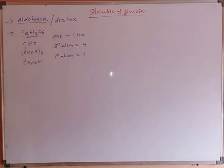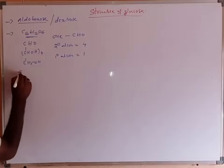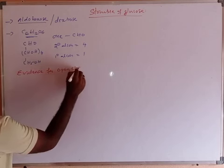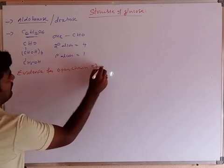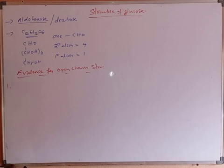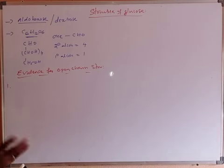This is the structure of glucose. Now let's discuss the evidence for open chain structure. The first reaction is with hydroiodic acid in the presence of red phosphorus. Glucose reacts with hydroiodic acid in the presence of red phosphorus to form n-hexane. The formation of n-hexane indicates that six carbon atoms are in a straight chain.